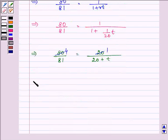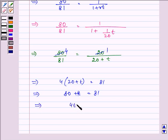That can be further written as 4 into 20 plus T is equal to 81. 80 plus 4T is equal to 81. 4T is equal to 1 and T is equal to 1 by 4 of a year.